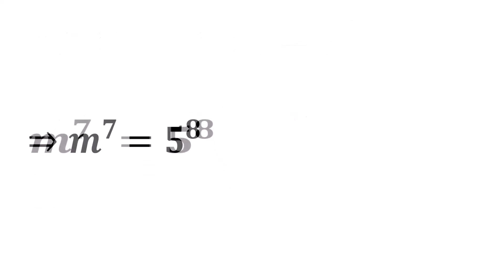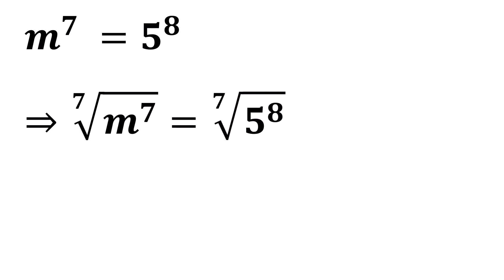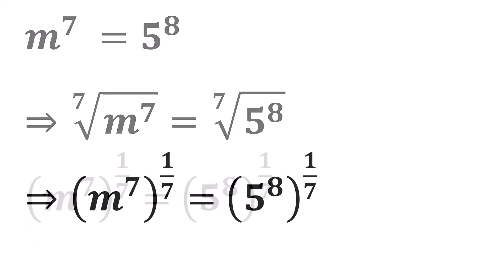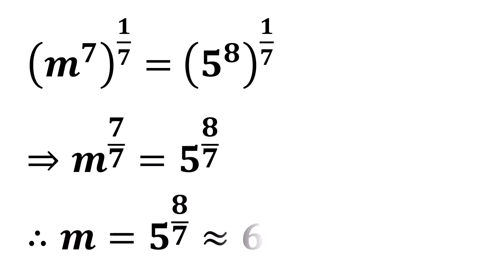Taking the seventh root of both sides, we can write the seventh root of m to the power of 7 equals the seventh root of 5 to the power of 8. The seventh root is the same as raising to the power of 1 over 7. So, we get m to the power of 7, all raised to the power of 1 over 7, equals 5 to the power of 8, all raised to the power of 1 over 7. Simplifying this, we get m to the power of 7 over 7 equals 5 to the power of 8 over 7. Therefore, the value of m equals 5 to the power of 8 over 7.